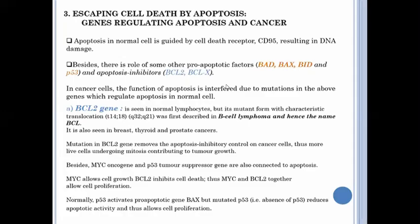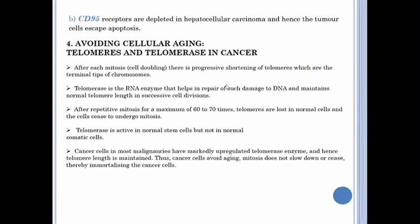Normally, the p53 activates the pro-apoptotic gene. When p53 is absent, it will reduce the apoptotic activity, causing cell proliferation in a neoplastic lesion. The CD95 receptors are depleted in hepatocellular carcinomas, and hence the tumor cells escape apoptosis. The next hallmark of the gene for producing the neoplasm is avoiding cellular aging, which functions by the telomerase and the telomerase activity in the neoplastic cells.